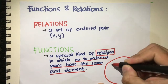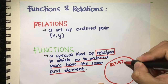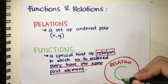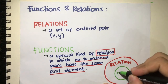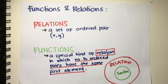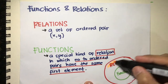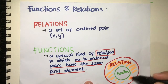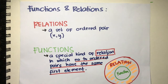Since a function is a special kind of relation, we can represent this using a diagram. This set represents relation, and since function is a special type of relation, this inner part represents your function. So you can say that all functions are relations, but not all relations are functions, since there are parts of relation that are not part of functions.